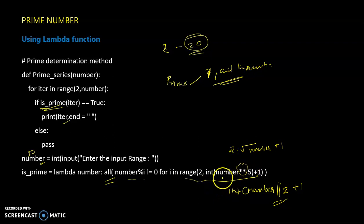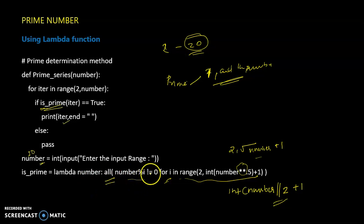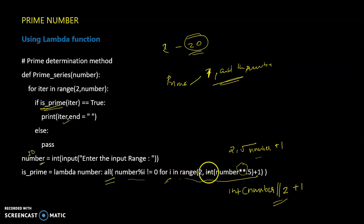On the other hand, the number is divisible up to half of the number. We will check the square root of the number. If the number is divisible, there is a false value. If the all function does not return a false value, the function returns a true value and the value will be printed.